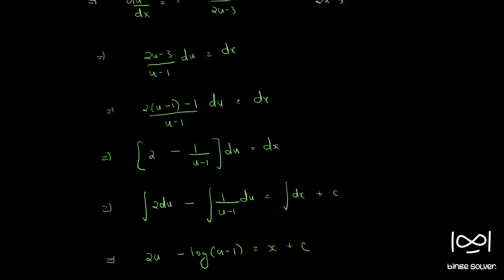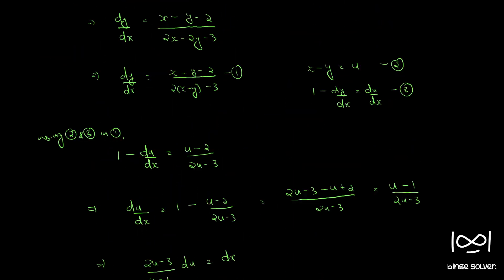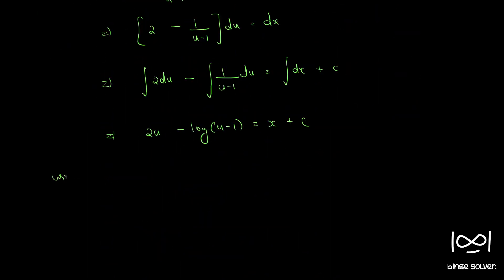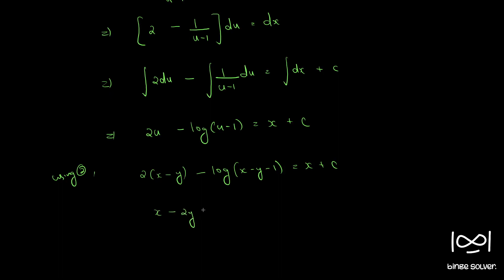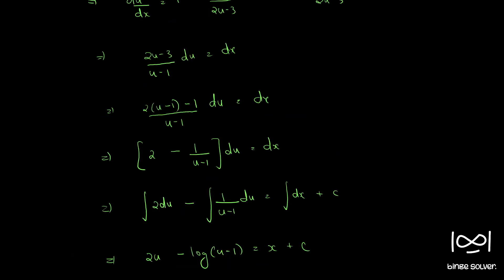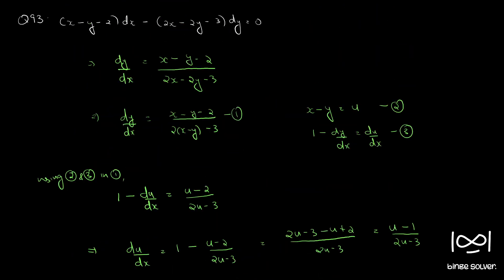From equation 2, we have u equal to x minus y. Substituting back: 2 times x minus y minus log of x minus y minus 1 equal to x plus c. Bringing x to the other side, it becomes x minus 2y minus log of x minus y minus 1 equal to c. This is the final answer to question 93.